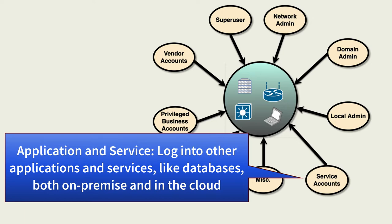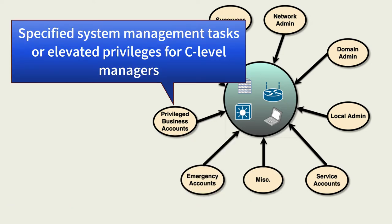Both of these account types typically access both on-premise and cloud resources. In today's environments, permission assignment is often distributed. Distributed administration of business applications enables data owners to manage roles directly and quickly make needed changes using privileged business user accounts. Further, some organizations do not enforce need-to-know, least privilege, and separation of duties for high-level management.